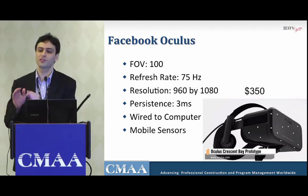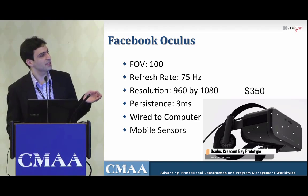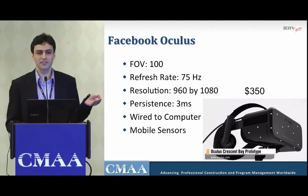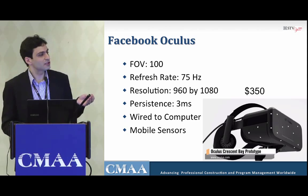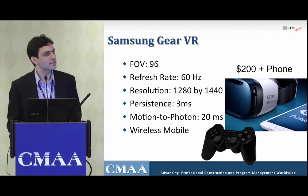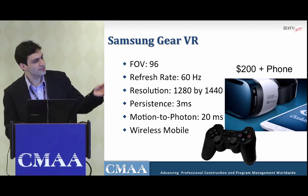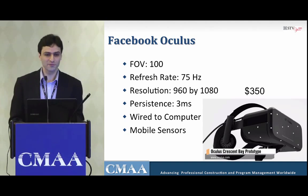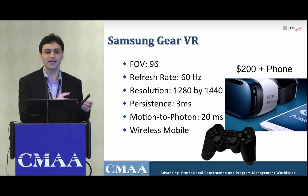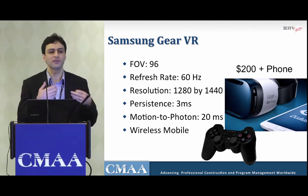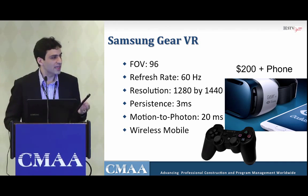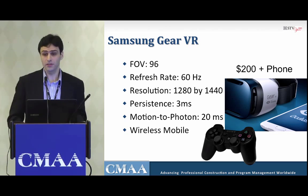The hardware available now is close but not quite at mass-market spec — it's currently for developers. For example, the Facebook Oculus Crescent Bay prototype has 100-degree field of view, 75 Hz refresh rate, 3 ms persistence, and is wired to a computer. The Oculus development kit is $350 — much less than the $60,000 of 1992. The Samsung Gear VR is about $200 and works with the Galaxy Note 4 using the phone's built-in sensors, wirelessly.